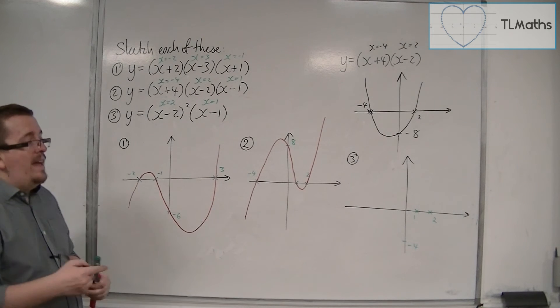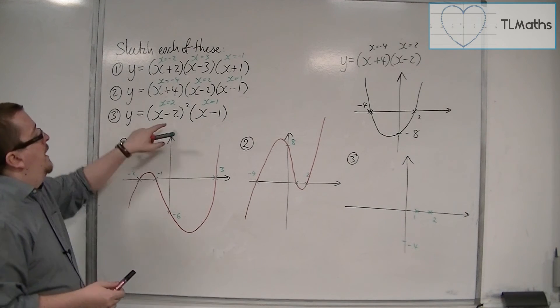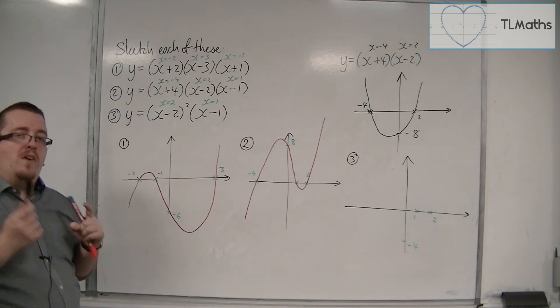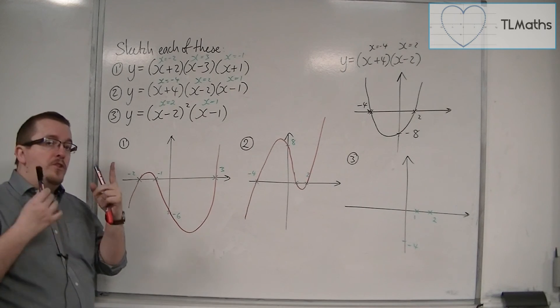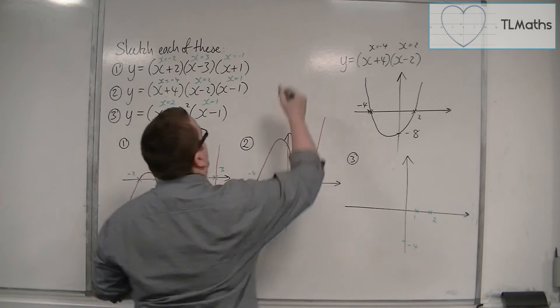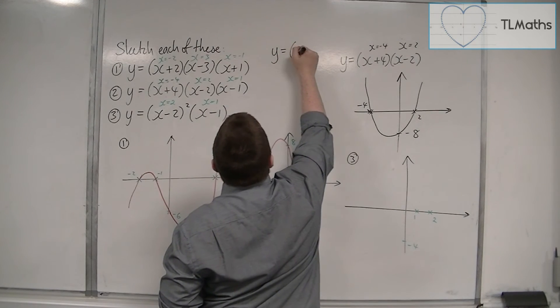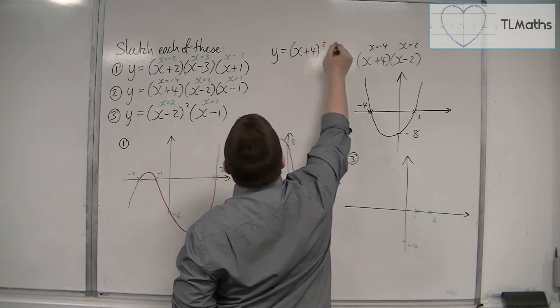Now, if ever we got an x minus 2 squared bracket when we were doing parabolas, so if I was asked to sketch y equals x plus 4 squared, for example, rather than y equals x plus 4, x minus 2...